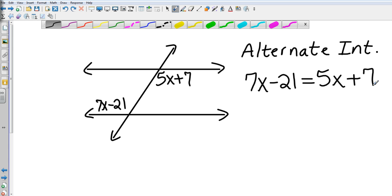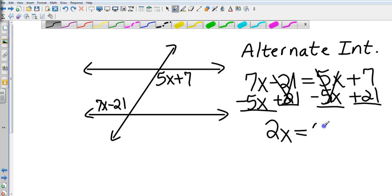So we're just going to solve for x. Let's tidy this up in a couple of steps. I subtract 5x from both sides, I'm also going to add 21 to both sides. That cancels this piece and this piece, leaving me 2x equals 28, so x is going to equal 14.